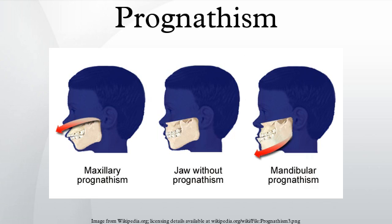Mandibular prognathism is a protrusion of the mandible, affecting the lower third of the face. Alveolar prognathism is a protrusion of that portion of the maxilla where the teeth are located, in the dental lining of the upper jaw. Prognathism can also be used to describe ways that the maxillary and mandibular dental arches relate to one another, including malocclusion.